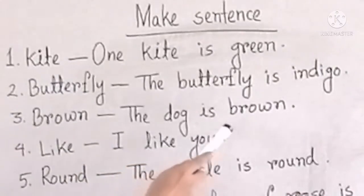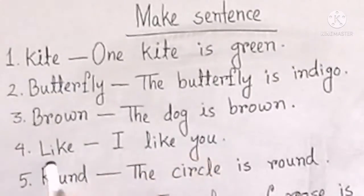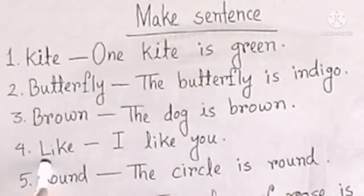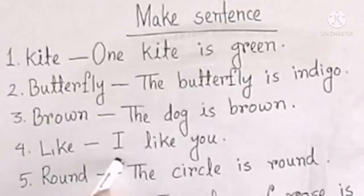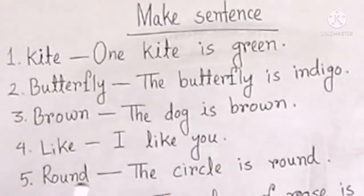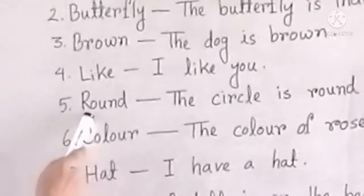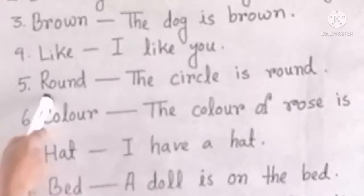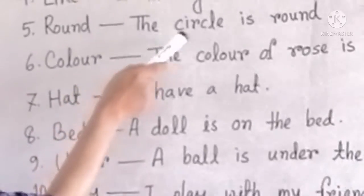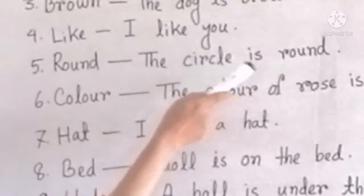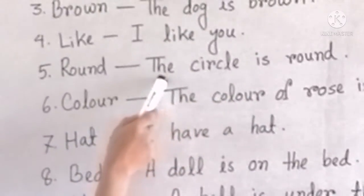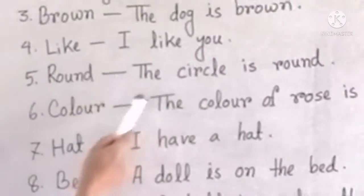Like — I like you. Round, gold — the circle is round, brittiti, gold.